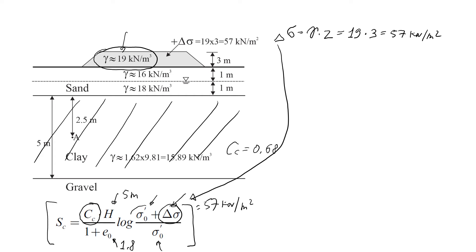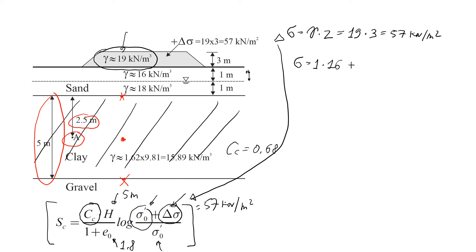What we need to find now is the initial effective stress. You need to be careful here: this value must be found at the middle of the clay layer, not the bottom or top. I've marked this as point A. Since the clay layer is 5 meters total, the midpoint is at 2.5 meters. To find the effective stress, we start with total stress. Before building the embankment we have 1 meter of relatively dry sand: 1 m × 16, plus another 1 meter of saturated sand times 18.